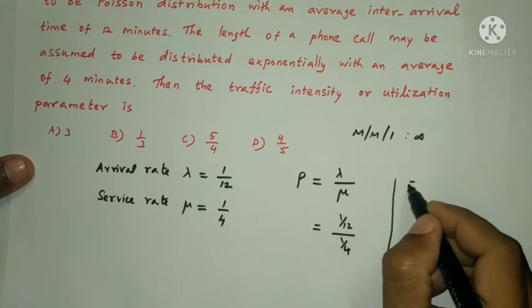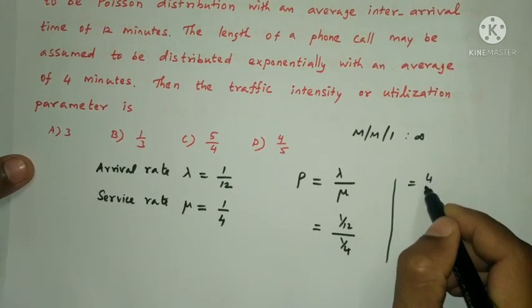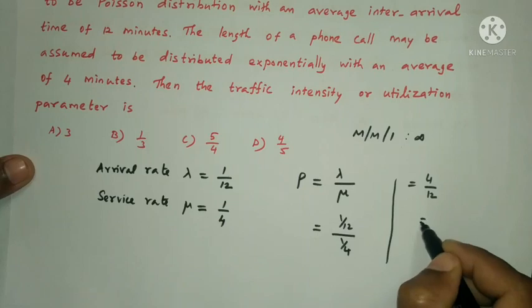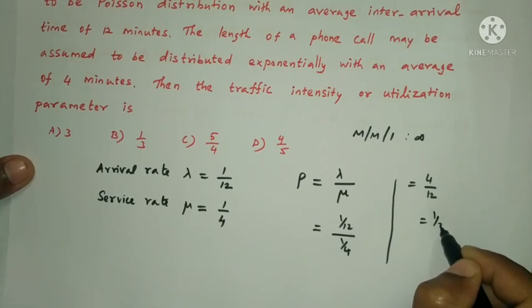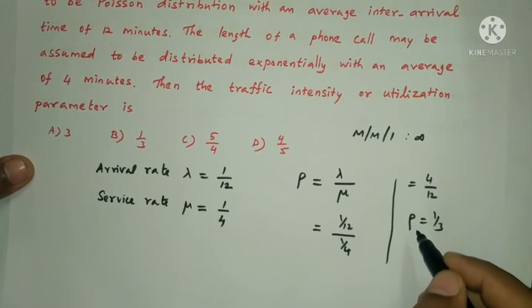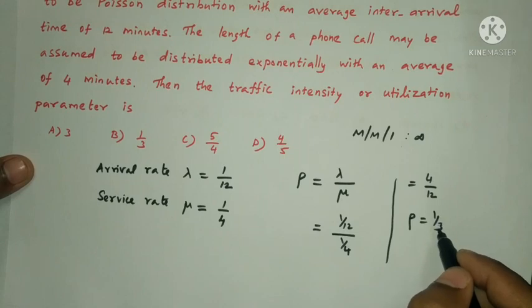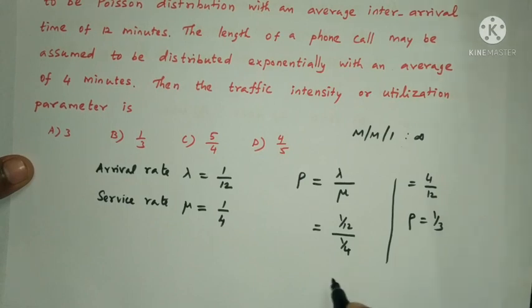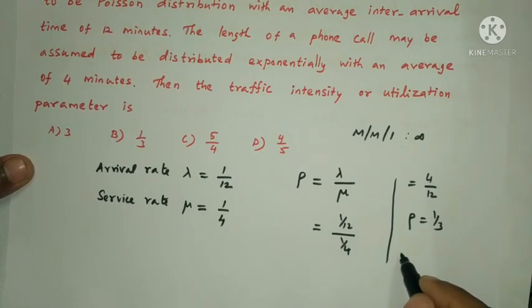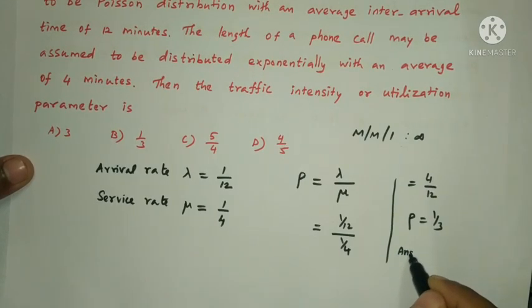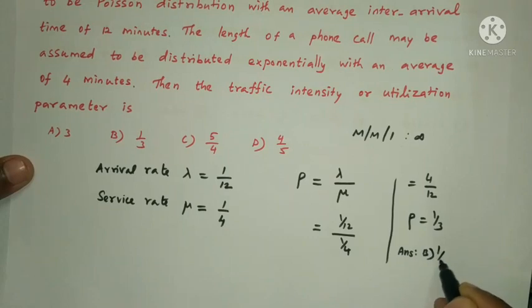Simplifying: rho = (1/12) × (4/1) = 4/12 = 1/3. Therefore, the traffic intensity and utilization parameter (busy period) = 1/3. The answer is option B.